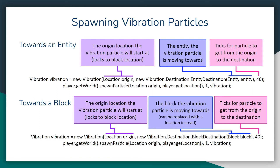That origin location in the spawn particle method doesn't actually matter much, so you can set it to anything — usually the same origin location in the Vibration object. For moving it towards a block, you create a new Vibration object but give it a BlockDestination instead of an EntityDestination. You can give it either an actual block object or a straight-up location, though if you give it a location it locks to the center of the nearest block. Give it the same number of ticks for travel, and attach the Vibration object to the spawn particle method call.